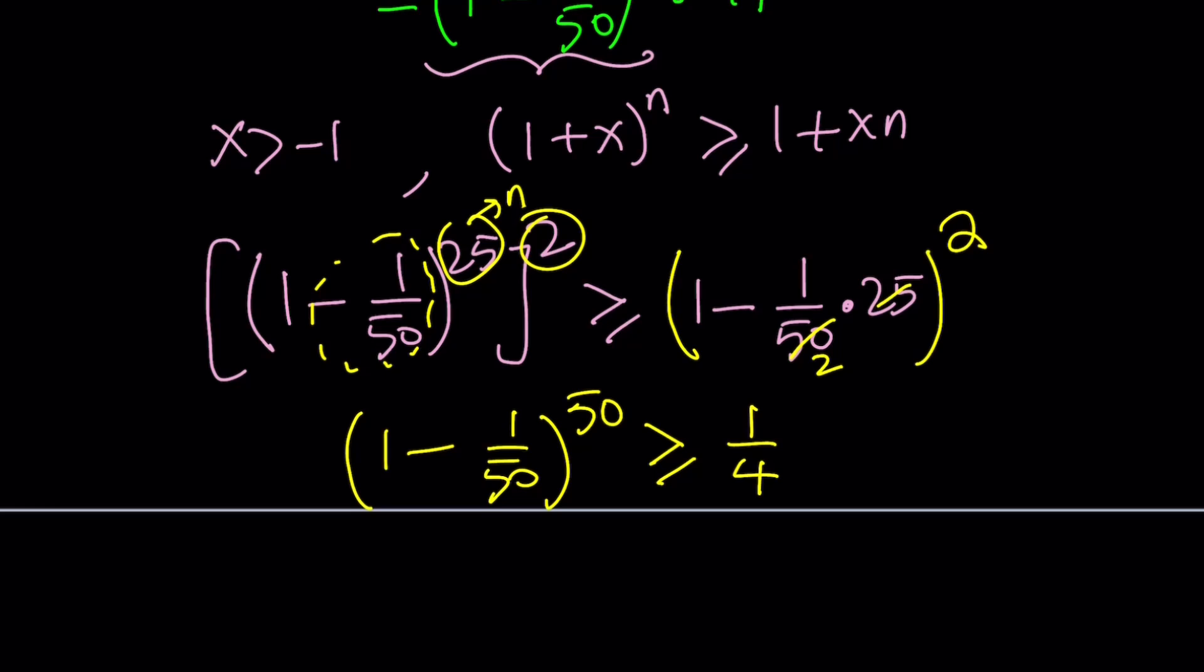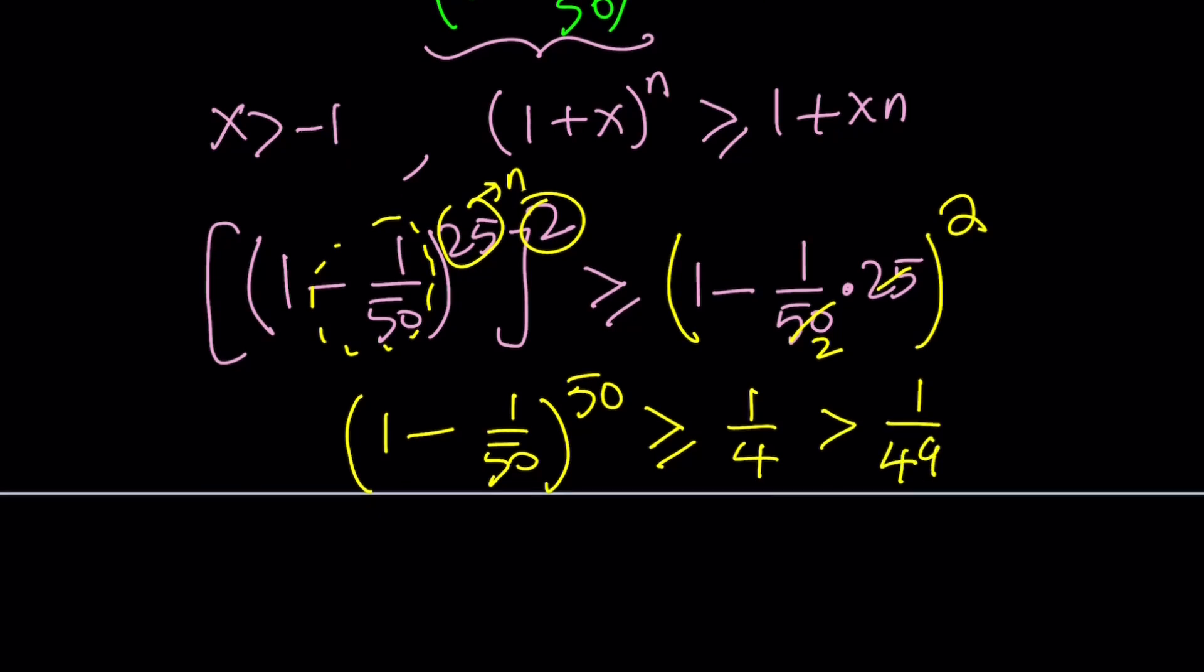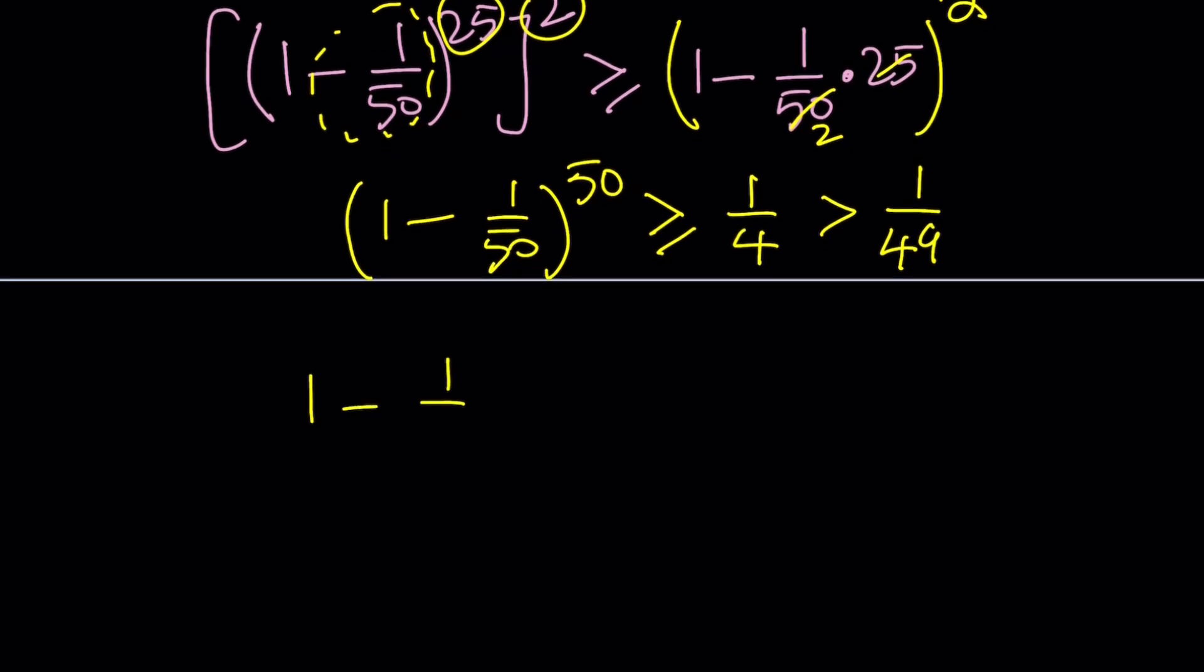That expression is greater than or equal to 1 fourth, but 1 fourth is greater than 1 over 49. This is important because we have that 49 as a factor in our expression. By Bernoulli's inequality, 1 minus 1 over 50 to the 50th power is always greater than 1 over 49.